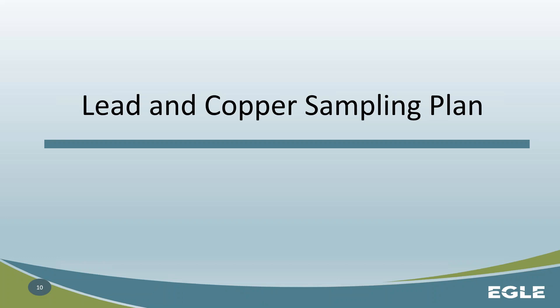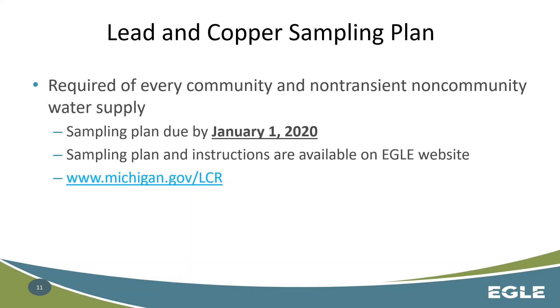The Lead and Copper Sampling Plan has you put these tiering criteria and sites chosen based on risk of lead exposure into a plan for your normal compliance sampling. It's required for every community and non-transient non-community supply and needs to be submitted to EGLE by January 1, 2020. We have a sampling plan form that includes instructions, available on the EGLE website at michigan.gov/LCR for lead and copper rule.